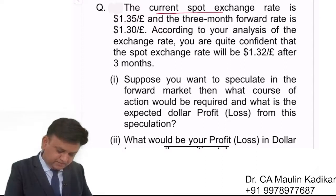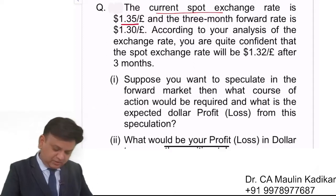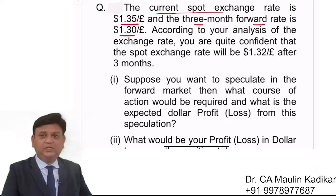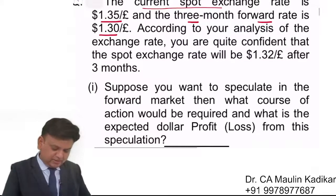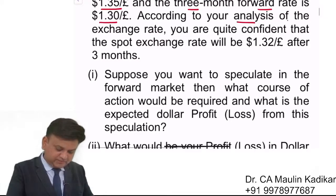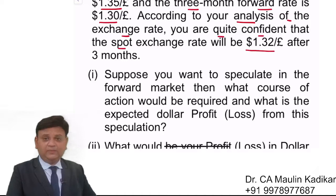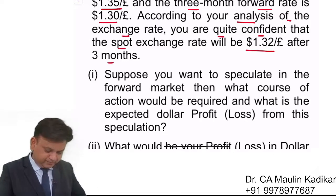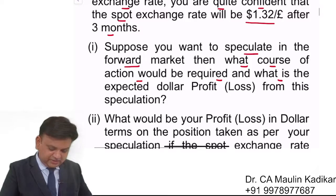The current spot exchange rate is $1.35 per pound and the 3-month forward exchange rate is $1.30 per pound. The current spot exchange rate is expected to be $1.32 per pound after 3 months. Suppose you want to speculate in the forward market, what course of action would be required and what is the expected dollar profit or loss from this speculation?